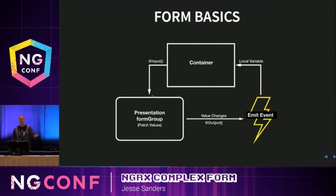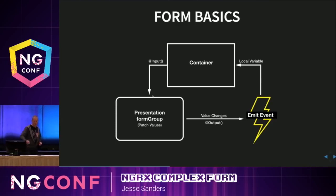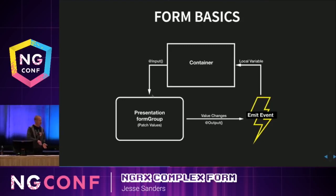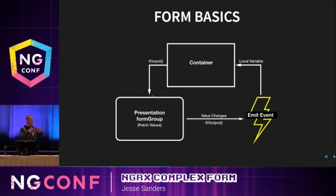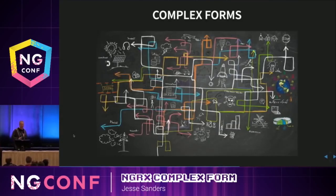The problem is that's really not life — we do display data, but the harder part is how do I actually edit data? So let's talk about form basics. The container passes data down through an input to the presentation component, which creates a form group. When values come down, we patch the values of our customer, product, and order into the form group to populate the form. When any value changes, we output those back up and emit an event. In most cases, we want to store it in a local variable. This is what complex forms look like — usually we have nested data.